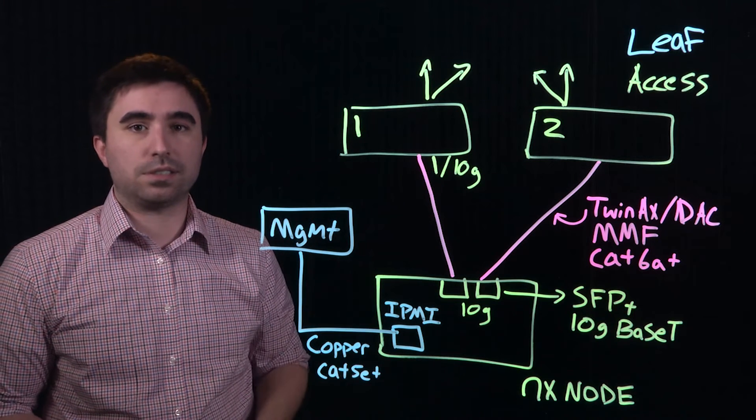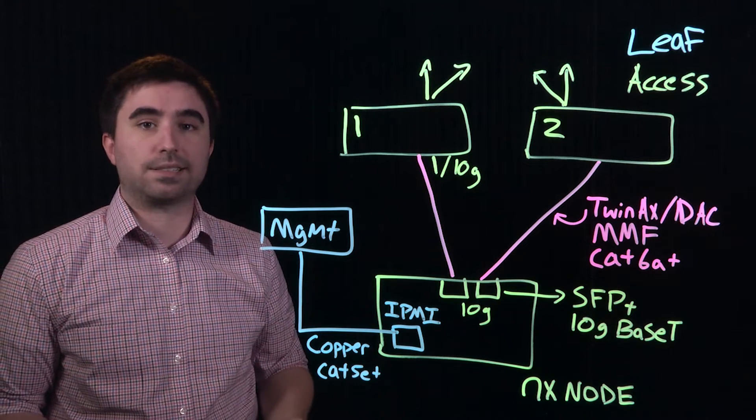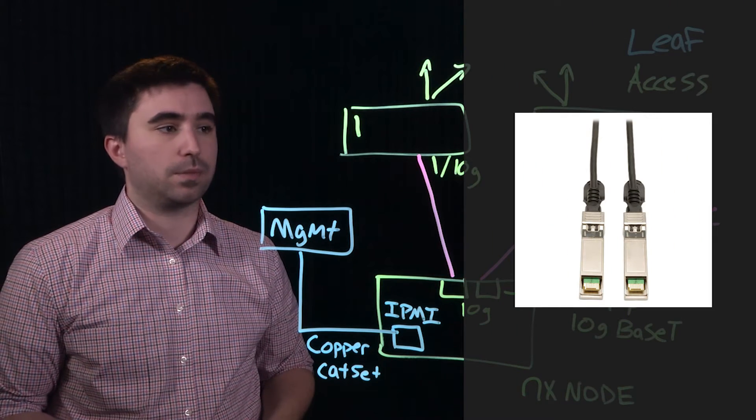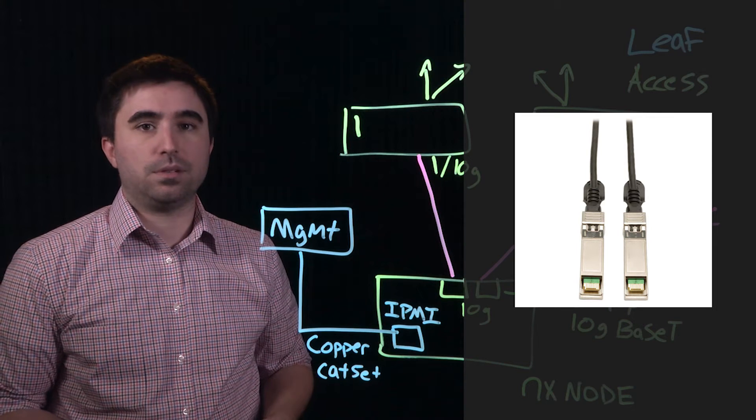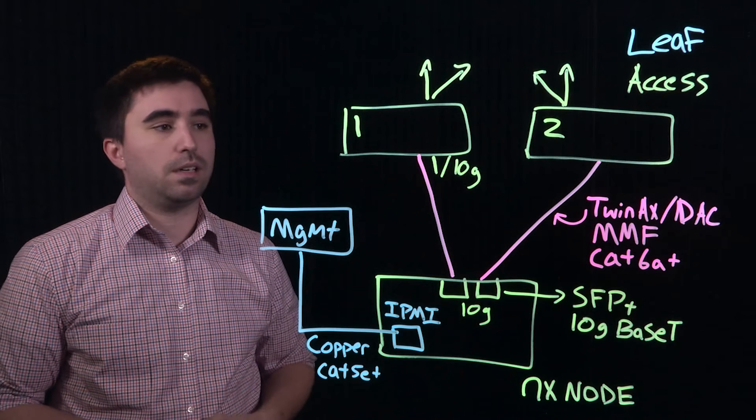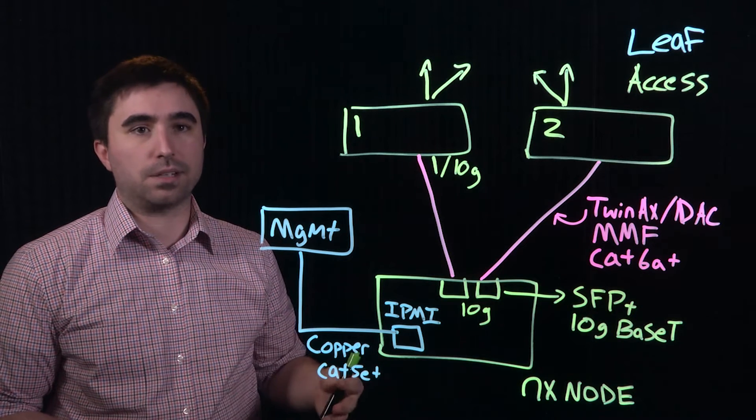There are a variety of choices to connect the 10 gig ports to the access and leaf layer. The most common choice is TwinAX or direct attached copper. This is a copper cable that has SFP compliant ports attached to the ends and typically goes anywhere from 1 meter to 10 meters.